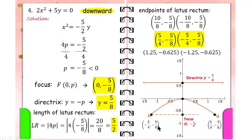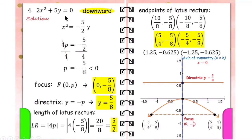The length of the latus rectum is shown here, and the axis of symmetry is x equals 0. So that is how we identify the parts of the parabola given the equation. But what if the equation is not given and instead we are asked to find the equation of the parabola given only the focus, the directrix, or the length of the latus rectum?